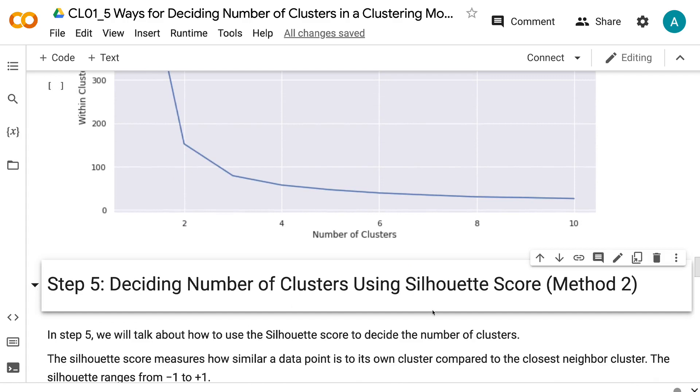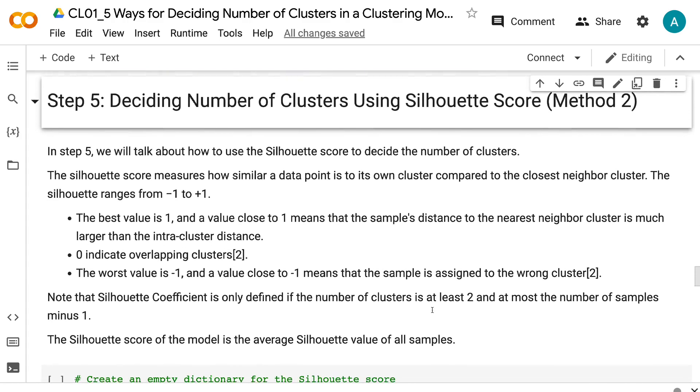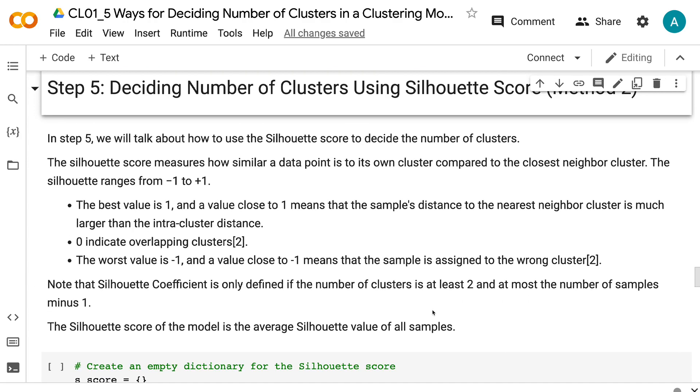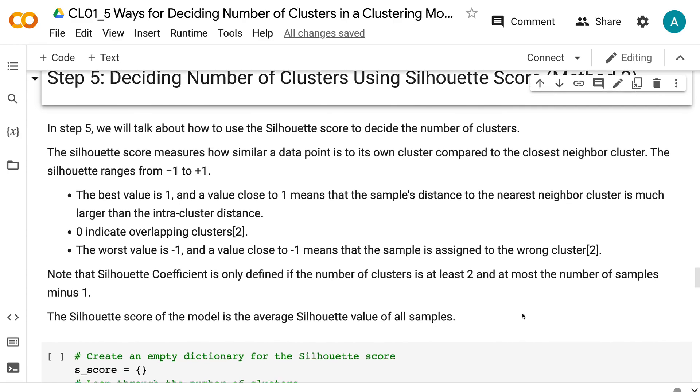In step 5, we will talk about how to use the silhouette score to decide the number of clusters. The silhouette score measures how similar a data point is to its own cluster compared to the closest neighbor cluster. The silhouette ranges from negative 1 to 1.